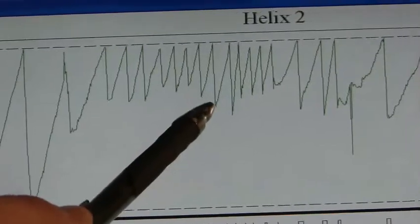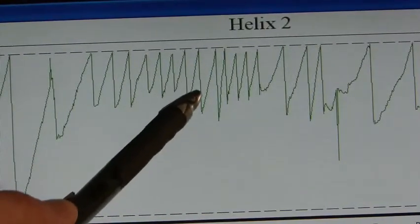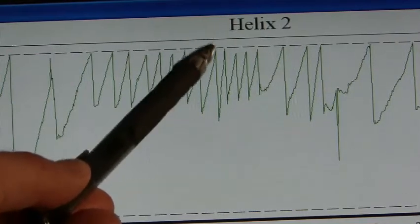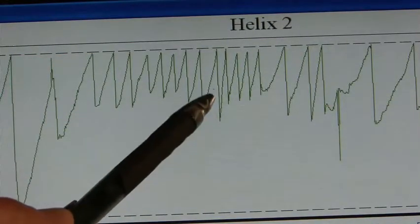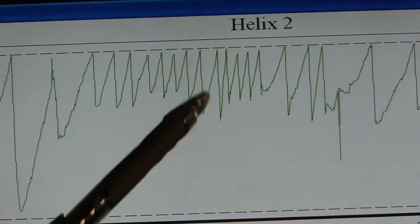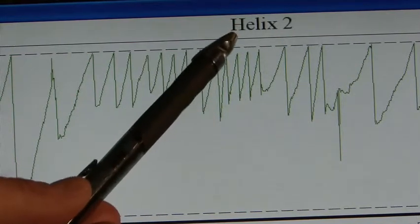Each of these peaks represents algae rapidly growing as it absorbs CO2. It reaches a pre-programmed level at which CO2 is introduced into the system, and then we have a period when the algae recovers. Then it reaches a level once again where it can rapidly absorb.